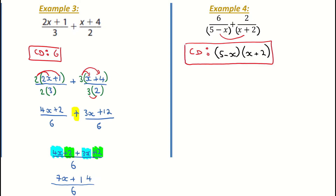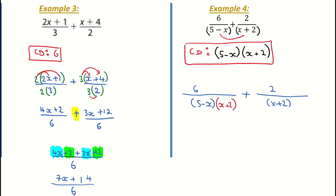I don't have to go multiplying them out. I write down my two fractions: 6 over 5 minus x, plus 2 over x plus 2. I've made my fraction line quite long to fit in the common denominator. I notice I need to make my common denominator (5 minus x)(x plus 2). So I'm bringing in the common denominator — for the first fraction, I'm multiplying the top and bottom by x plus 2, so I put x plus 2 in the numerator as well.